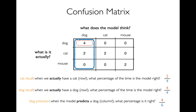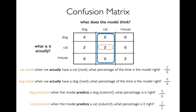The precision questions ask something different. For dog precision: when the model predicts that it's a dog, what percentage of the time is that right? Now we're talking about columns, because each prediction is along a column. We divide dog-dog (top left) by the entire dog column, giving four over six. For cat precision, we divide cat-cat by the cat column and see perfect precision. What you can see is that cat has great precision but a recall problem, while dog has perfect recall but poor precision — both are two ways of looking at the same mistake: sometimes we see a cat and the model thinks it's a dog.